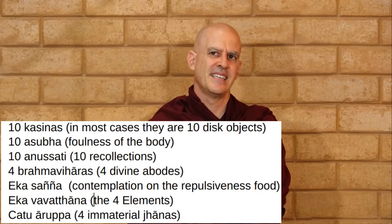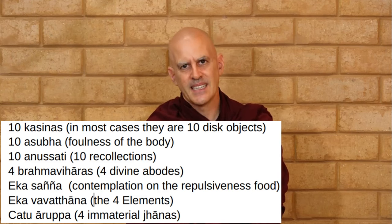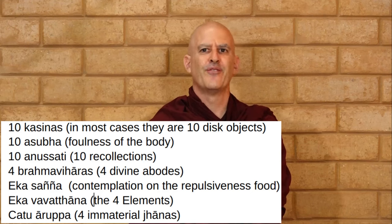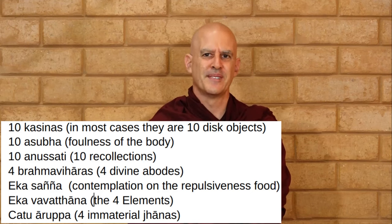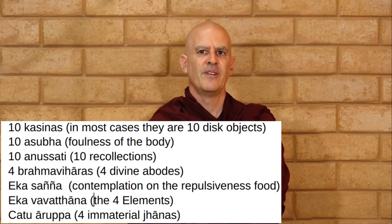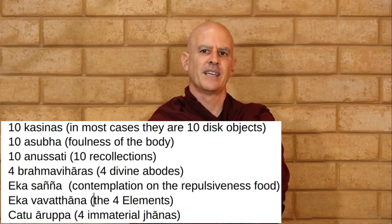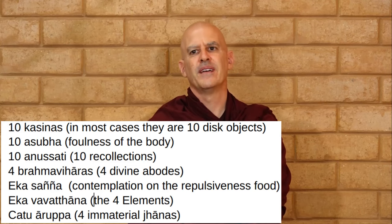So now we've covered the 40 objects and the 39 alternative objects to in and out breathing, mindfulness of breathing. We covered the 10 kasinas or 10 disk objects. We have the 10 asubha, which is the foulness of the body. We have the 10 anusatis, which are the 10 recollections. We have the four brahma-viharas, which are the four divine abodes. We have the eka-sanya, the contemplation of the repulsiveness of food. We have the eka-vavatthana, or what we call the four elements internally to the body. And we have the chatu-arupa-jhanas, which are the four immaterial jhanas. We also learned about the temperaments and the recommended objects for people with those temperaments.